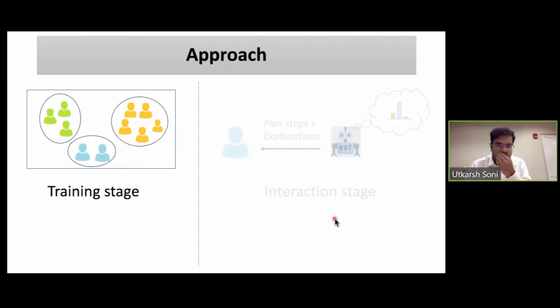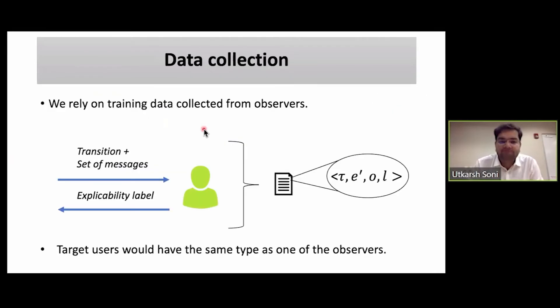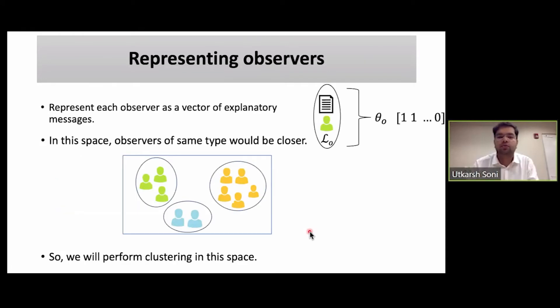So now we can talk about our approach on the training stage where we determine all the user types. For this, we rely on training data collected from observers. Observers are types of users to whom you can interact and collect data via counterfactual queries where we give them a transition, we give them a set of messages and we ask them, given this set of messages, would they find this transition to be explicable or not? The assumption is that the target user would have the same type as one of the observers, meaning that our problem is to actually identify user types among those observers.